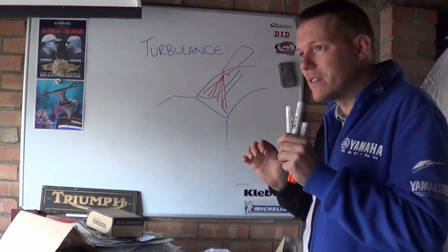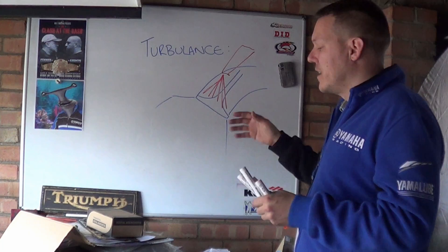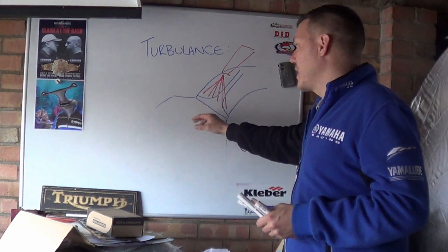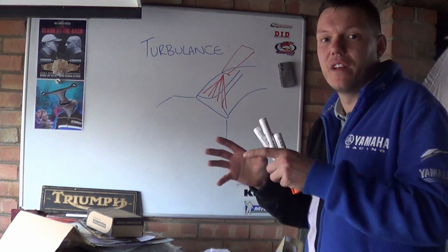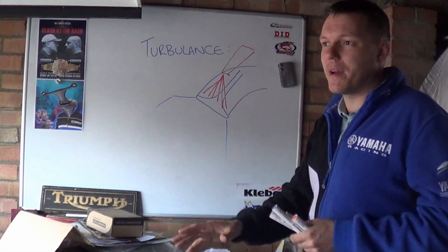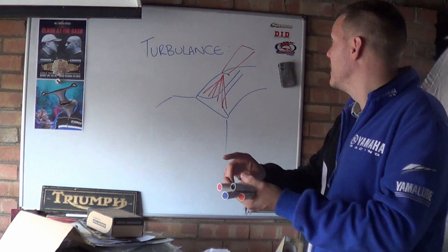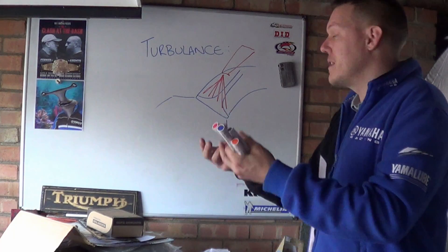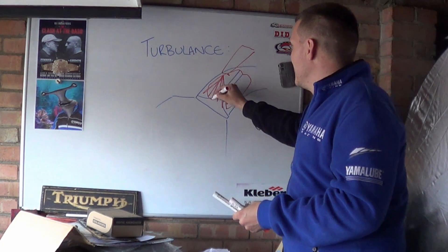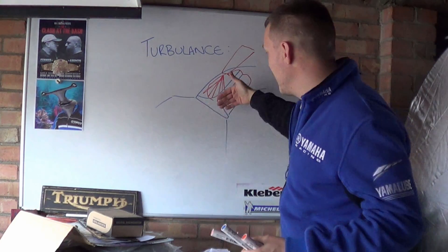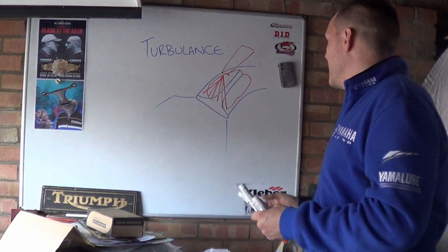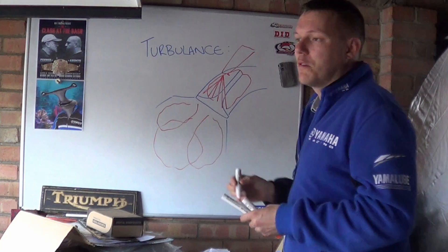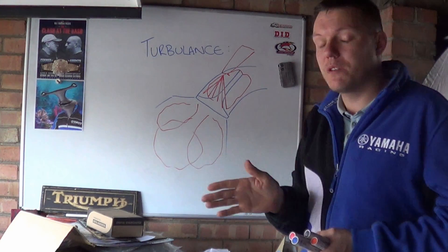When injectors spray fuel, it's microfine droplets — it still hasn't evaporated yet. If you spray the back of the valve, which is quite hot from the exhaust and power strokes, it does two things: it cools the valve down, and the fuel evaporates, taking that heat energy off the back of the valve. It evaporates in a big cloud, and then as soon as air comes in when the valve opens, it carries the vapour with it, pushing it all the way around, which helps with mixing.